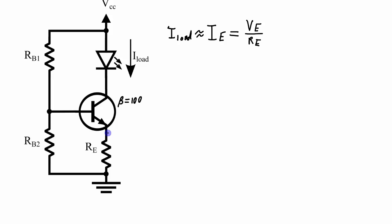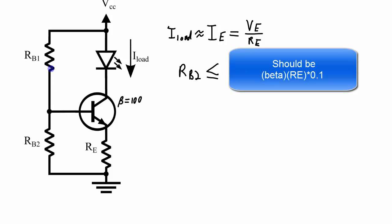The simplest way to set the voltage at the emitter is to set the voltage at the base with a voltage divider circuit like this. We need to ensure that RB2 is less than or equal to beta times RE over 0.1. The reason we want to do that is so that we can assume that this is a good enough voltage divider between RB1 and RB2 so that the current going through RB1 is also going through RB2. The base current is minimized by making sure this resistance is big enough.